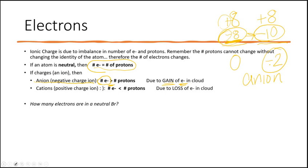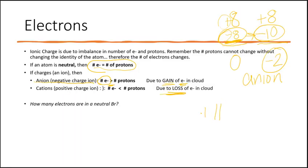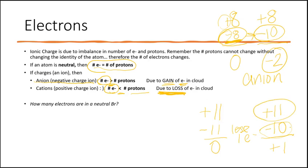You can also lose electrons. Say I have 11 protons and was neutral with 11 electrons, but I lose one electron — now I have 10 electrons. I always keep the same number of protons or else my identity changes. 11 minus 10 is a positive one charge. So if electrons are less than protons, I have a positively charged ion. This is called a cation.